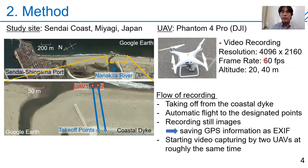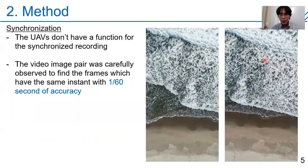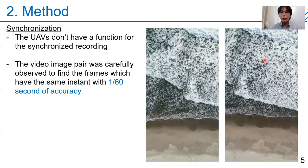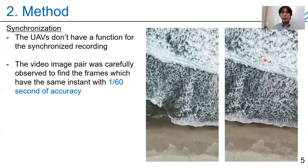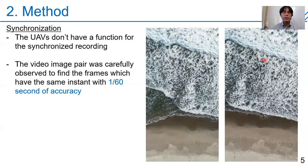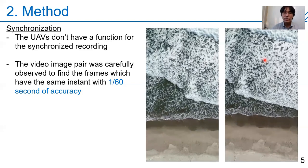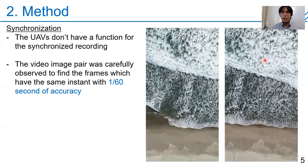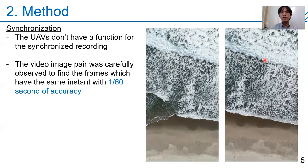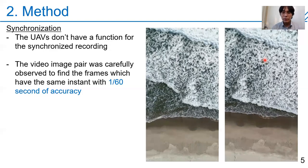As I didn't add any special devices to the drones, they don't have a function for synchronized recording. So I just started recording almost at the same time, and after recording I carefully checked the video images to find the same frame. This is not a perfect synchronization method and may include a time difference of 1/60 of a second, since the frame rate is 60 frames per second. However, I think this possible time difference is smaller compared to the timescale of wave propagation or wave period, so I tried this simple method for the first trial.